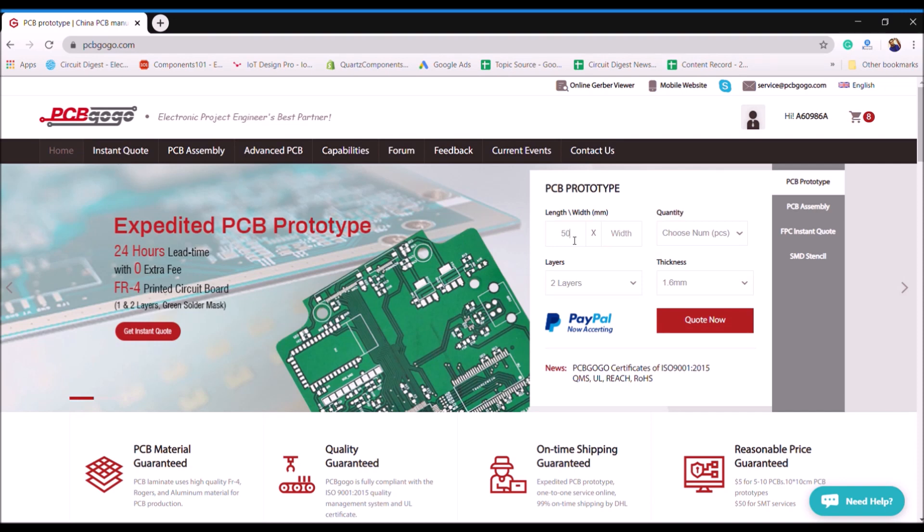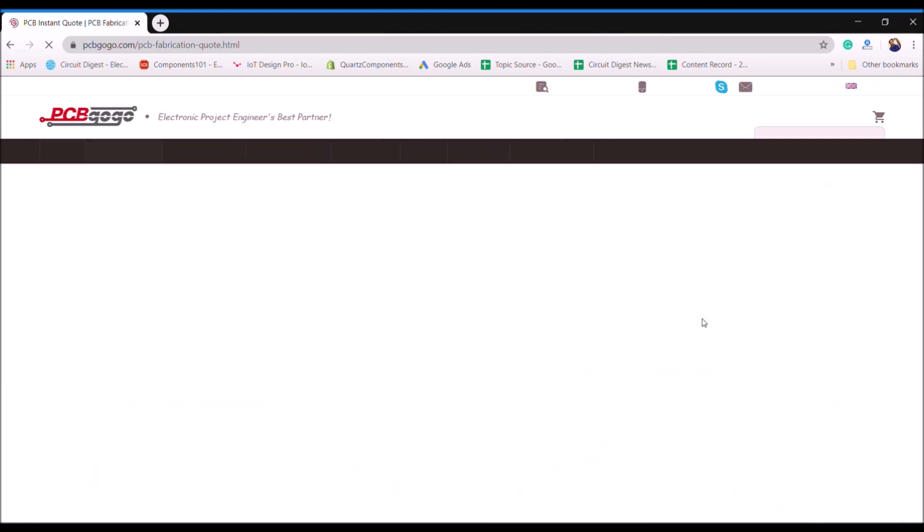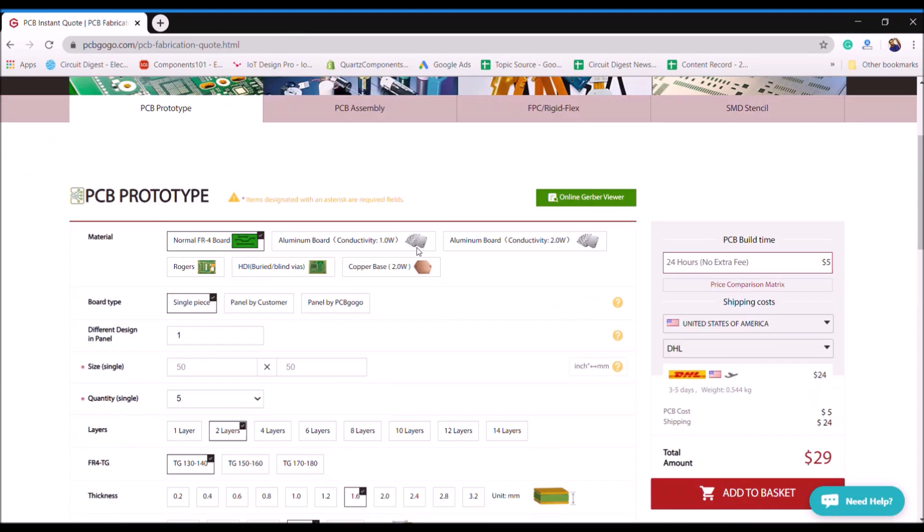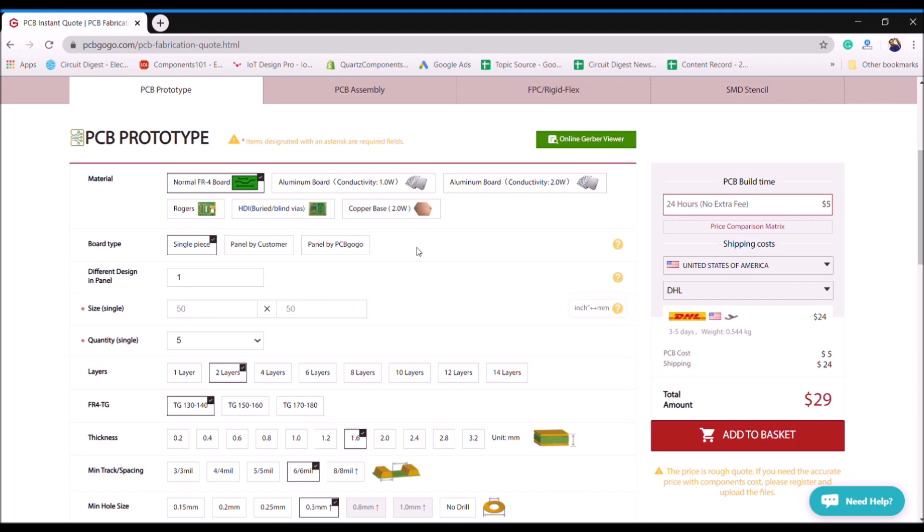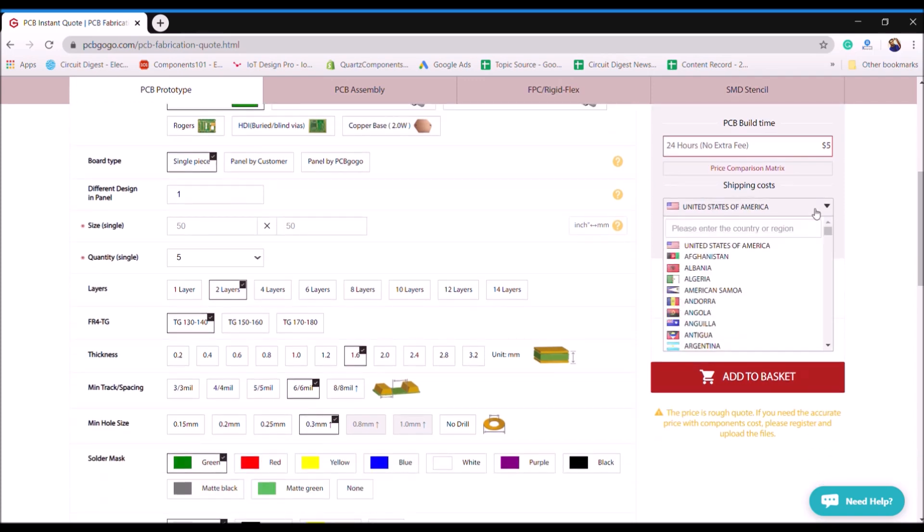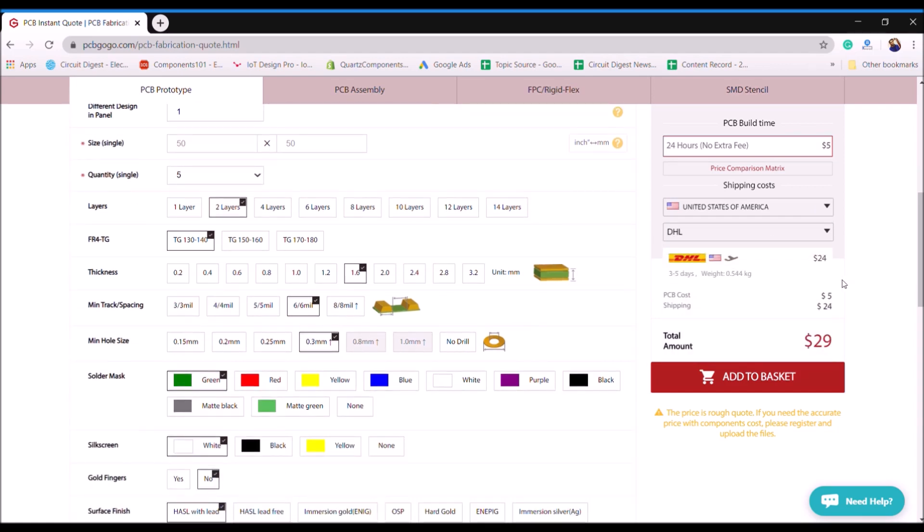On the top right corner make sure you have already signed in and then you can enter the dimensions of your PCB. For example mine is 50 x 50 and the number of quantity would be 5. I will be using a two layer PCB and the thickness would be 1.6 mm. I will just click on quote now and on the next page you will be taken to provide more options. By default you can leave all these values as they are. For example we'll use a normal FR4 board which is a single piece board and the important thing over here is on the right side you can select the country you are in and the type of shipping you would like to use.